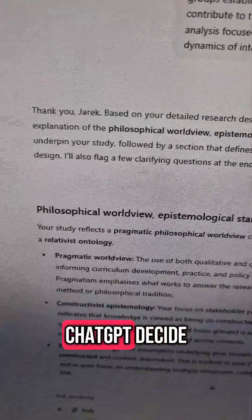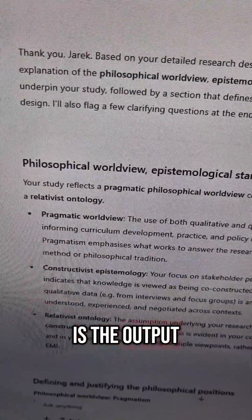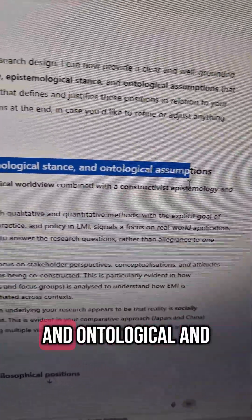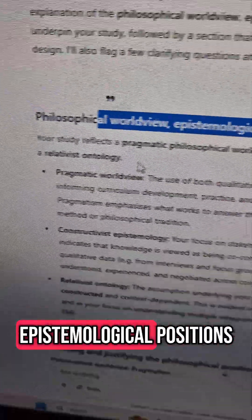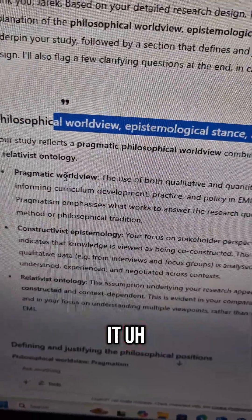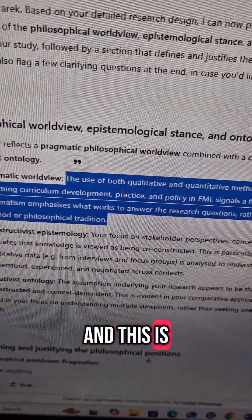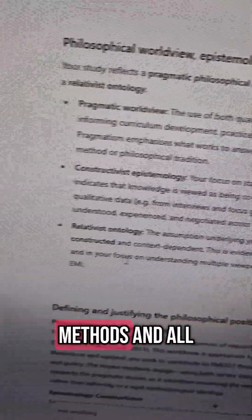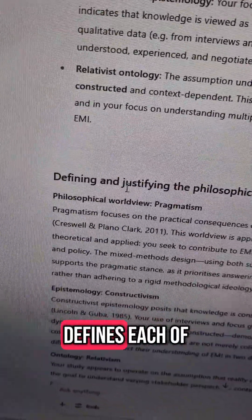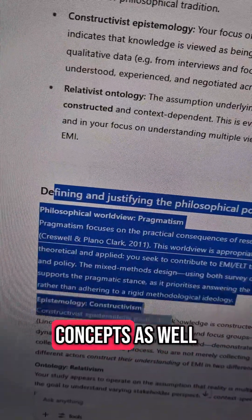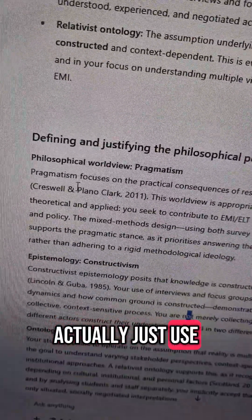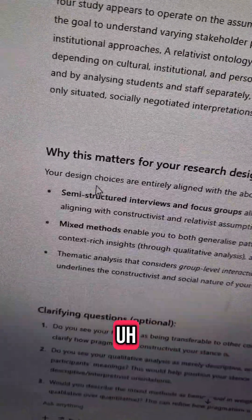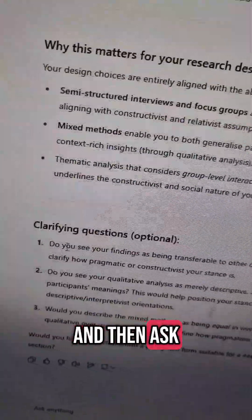This will help ChatGPT decide. And as you can see, this is the output that it produced. It lists all the worldviews, philosophies, and ontological and epistemological positions. It defines each one and — and this is what I really like — explains why it's suitable for my study, talking about participants, methods, and all other relevant details. It defines each of these concepts as well, so I can actually use all these things in my writing, and then it breaks it down even further and asks clarifying questions.